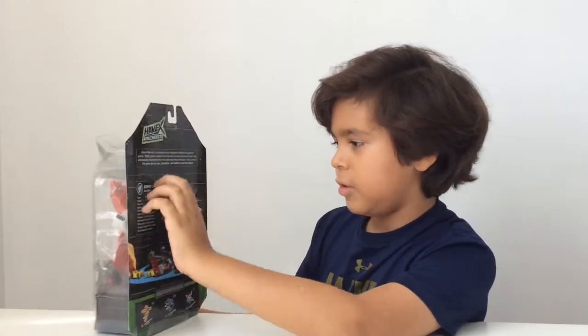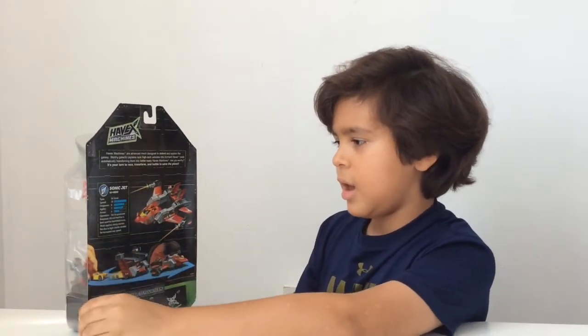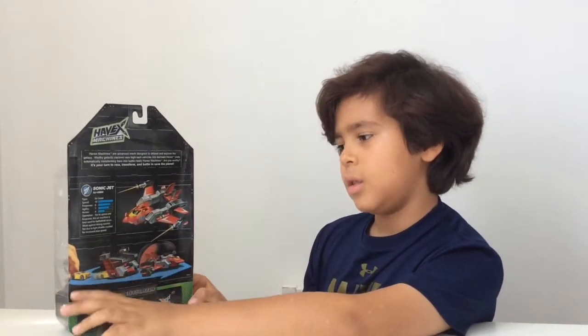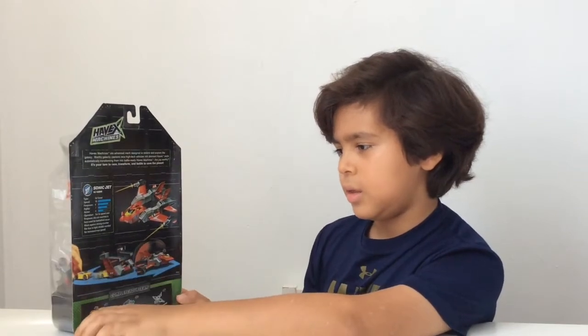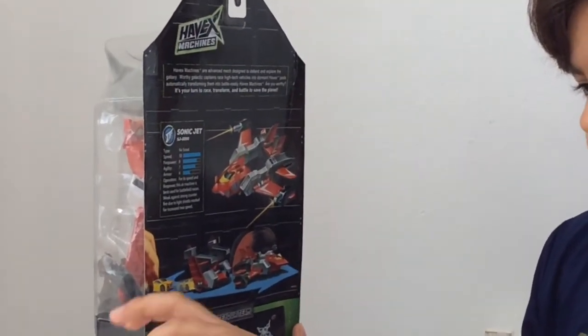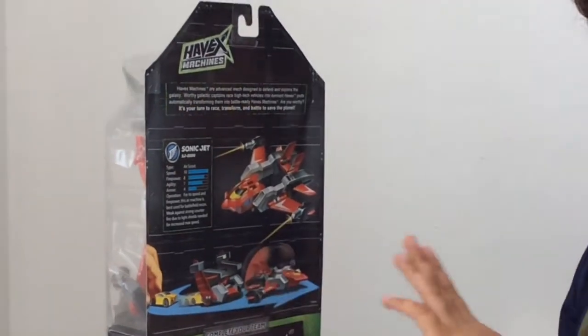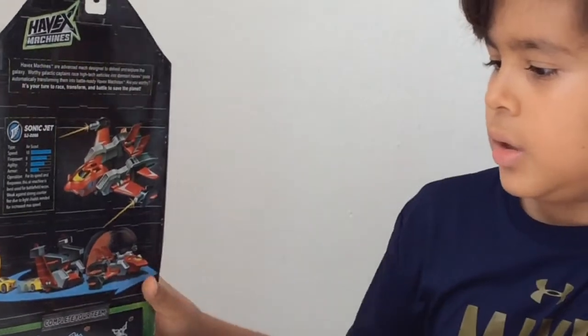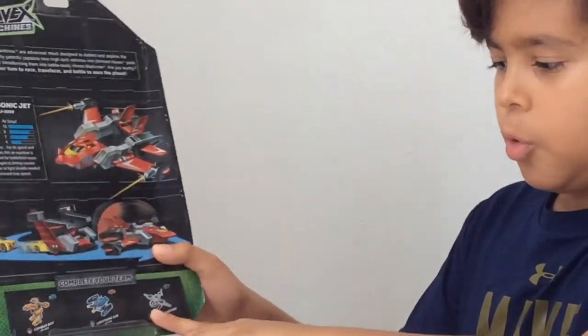And it has a yellow card. So this is how it looks like when it doesn't transform yet. The card just goes in the cockpit, and it just forms into the jet, SonicJet. And there's three more right here.